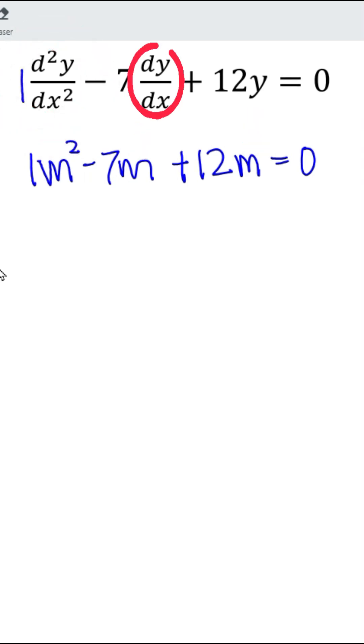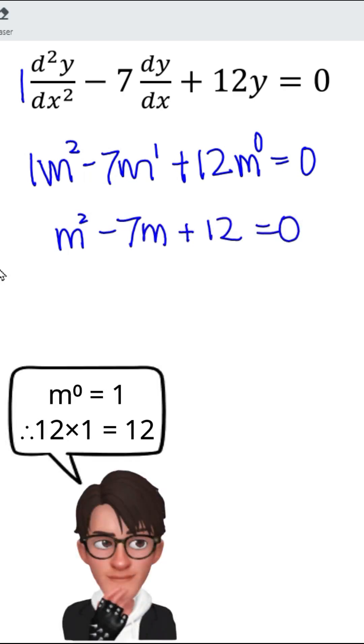Second order, power 2. First order, power 1. y is not a derivative, so power 0, which means that this is simply m squared minus 7m plus 12 is equal to 0.